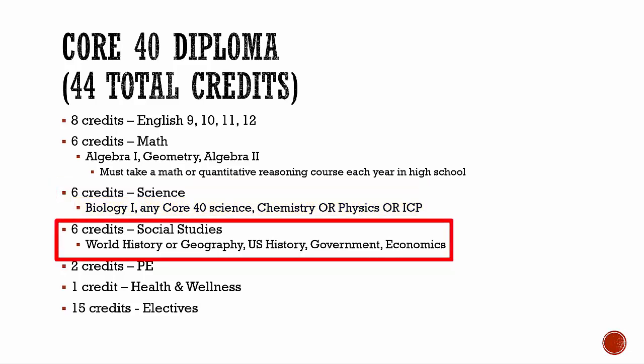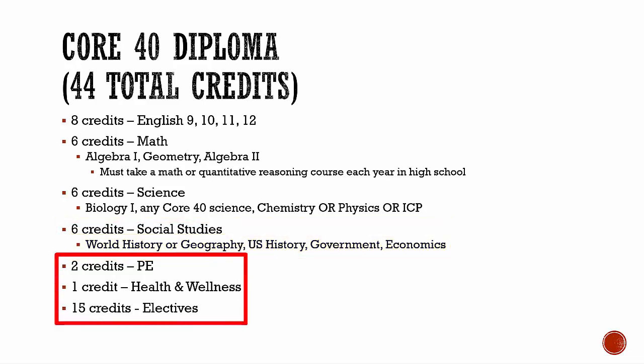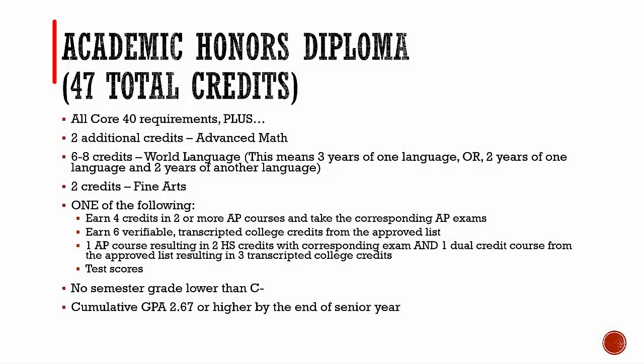Six social studies credits, which includes two credits in World History or Geography, two credits in U.S. History, one Economics credit, and one Government credit. Finally, you need two credits in PE, one Health credit, and at least 15 electives to complete the required credits for the Core 40 diploma.